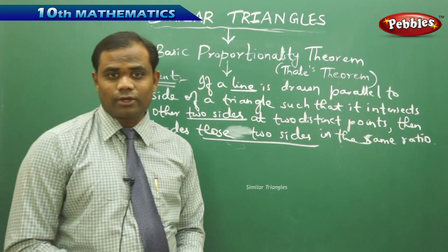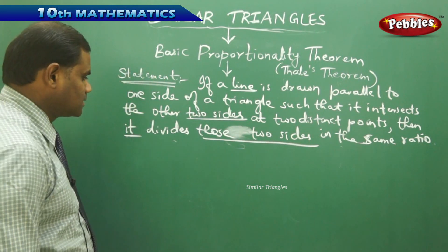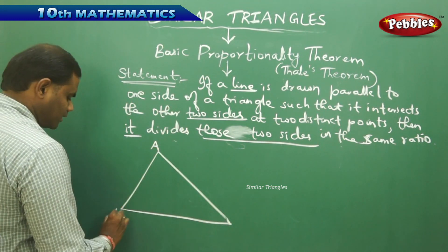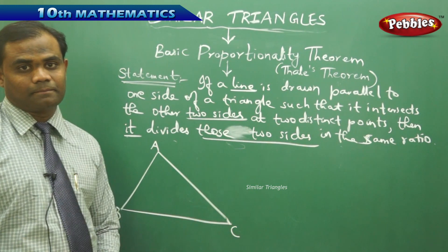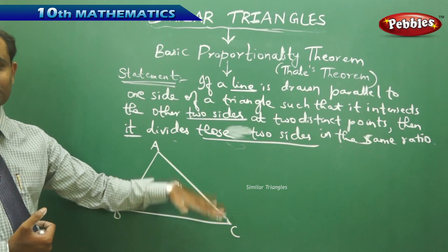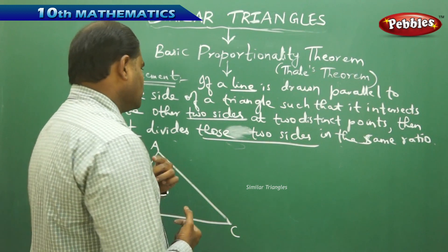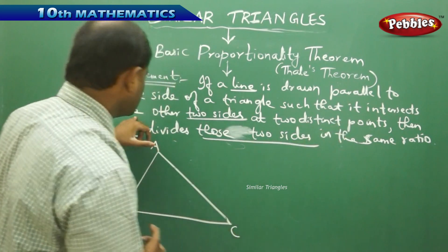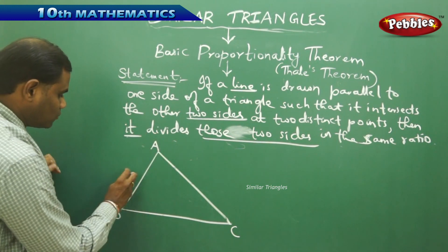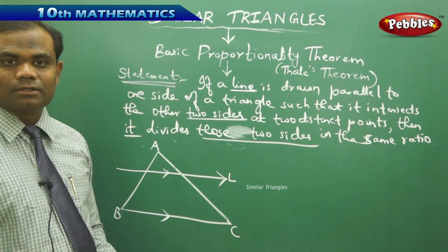Let's understand this mathematically by drawing a triangle, because understanding the statement of the theorem is very important, more than the proof itself. For triangle ABC with three sides AB, BC, and CA, the theorem says a line is drawn parallel to one side. Let me choose BC as that side. Drawing a line parallel to BC, the condition says it must intersect the other two sides at two distinct points, so the line must be drawn between vertex A and side BC. Let's draw this line parallel to BC intersecting the triangle.